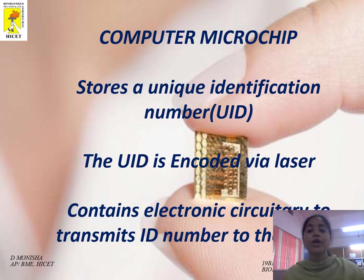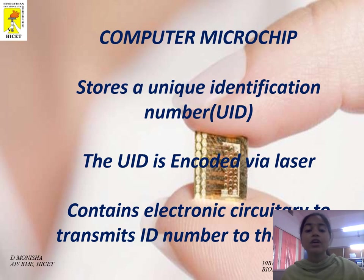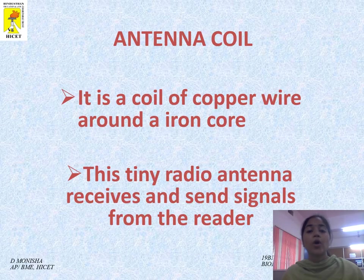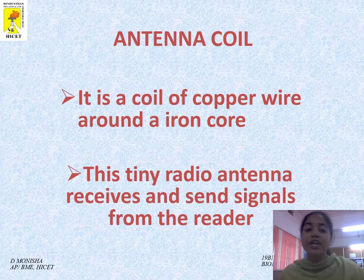Computer microchip: It stores a unique identification number (UID) encoded by a laser. It contains electronic circuitry to transmit the identification number to the reader. Antenna coil: It is a coil of copper wire around an iron core. This tiny radio antenna receives and sends signals from the reader.